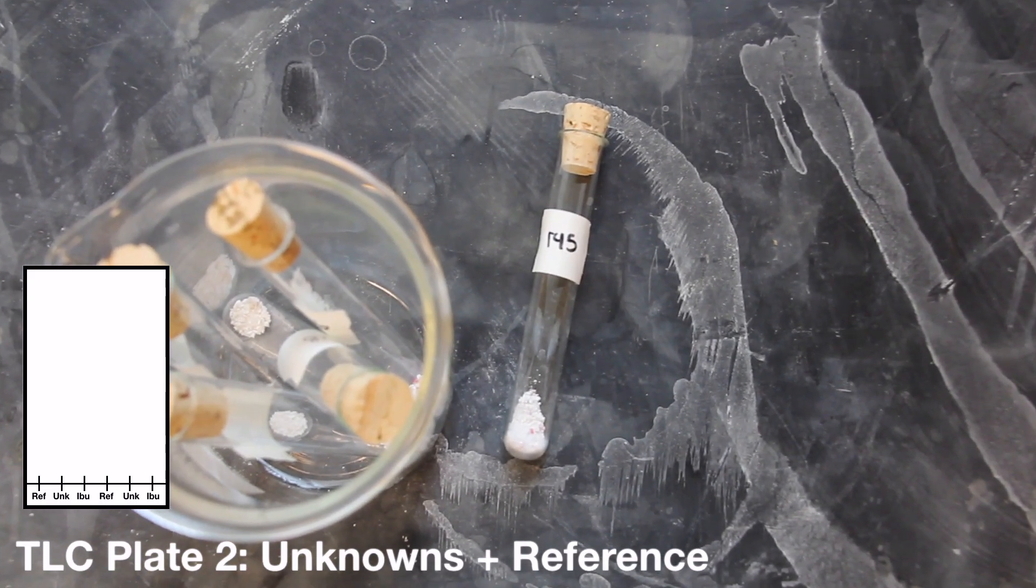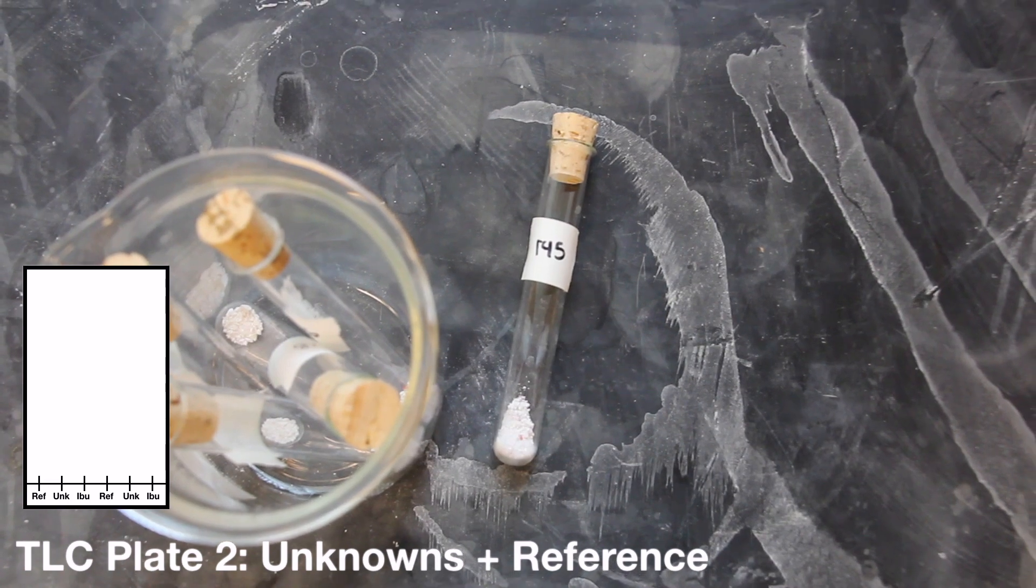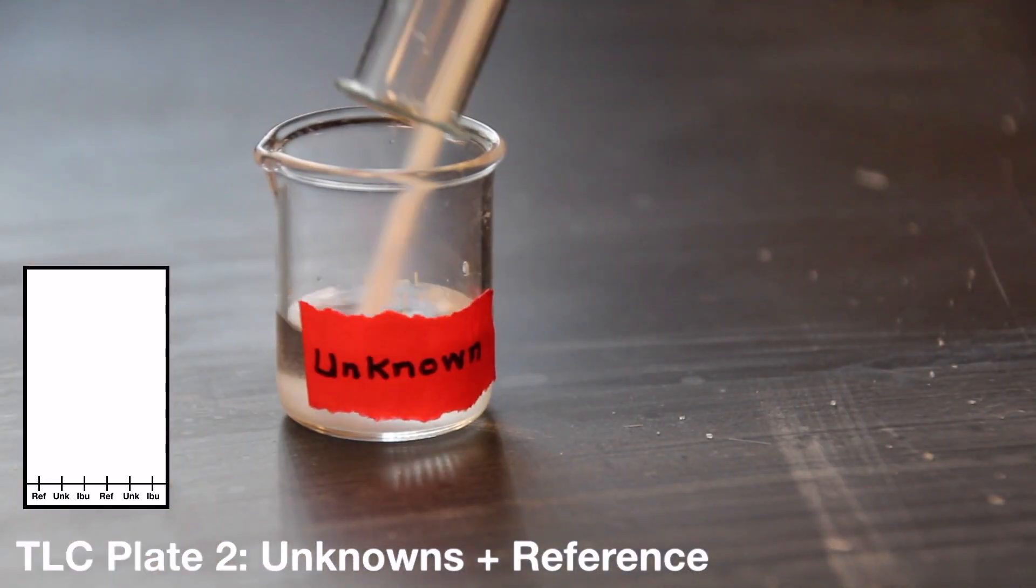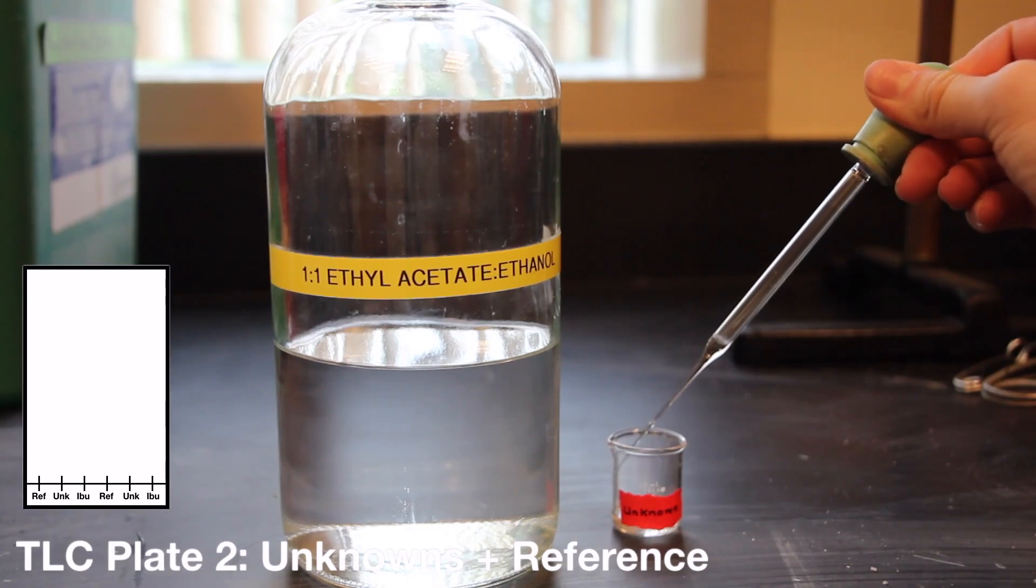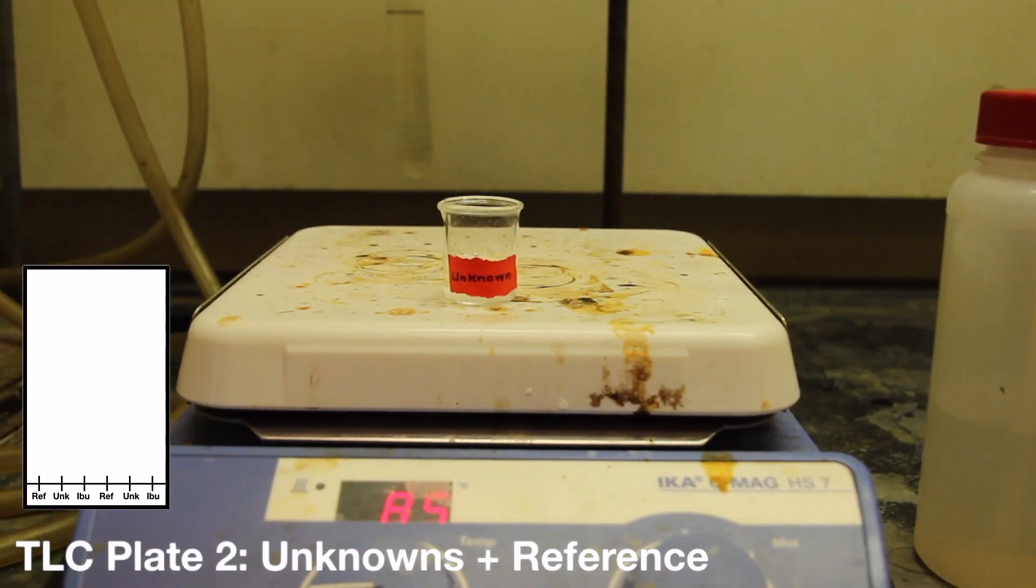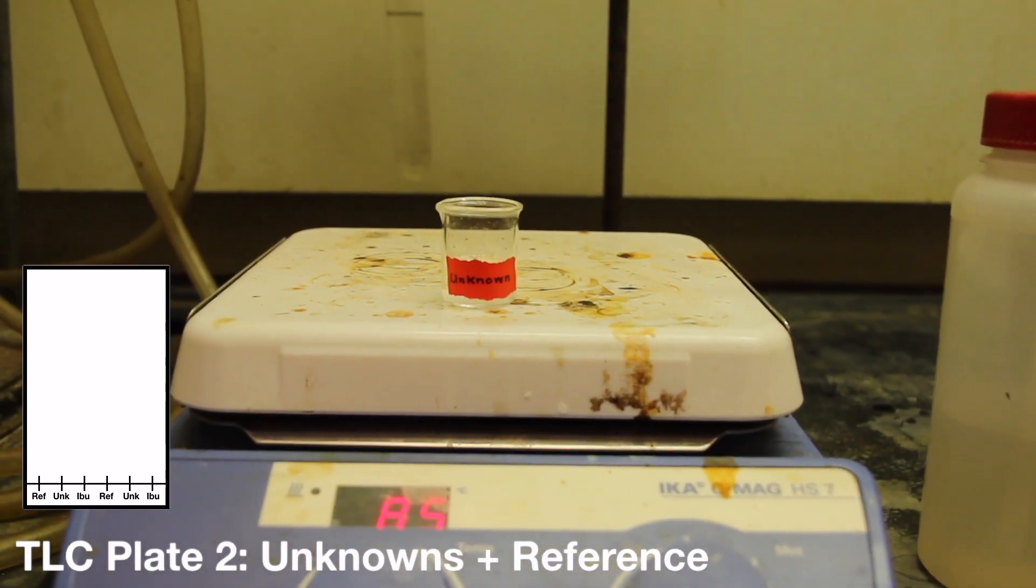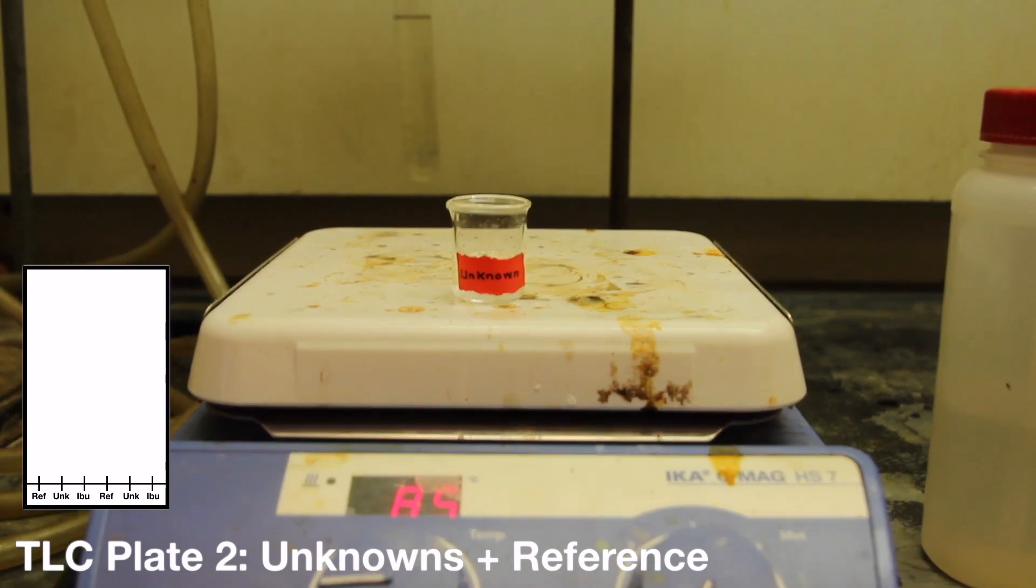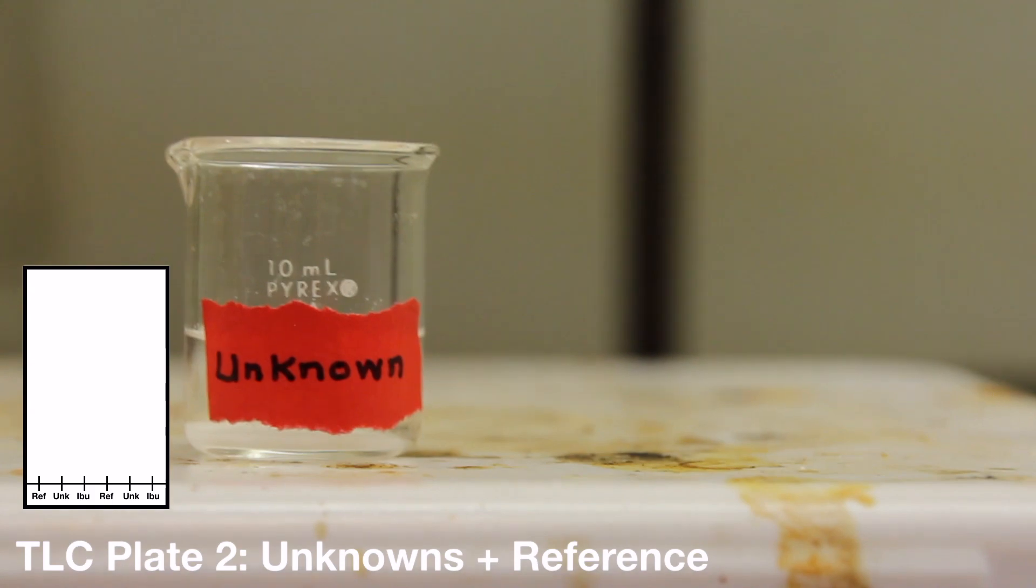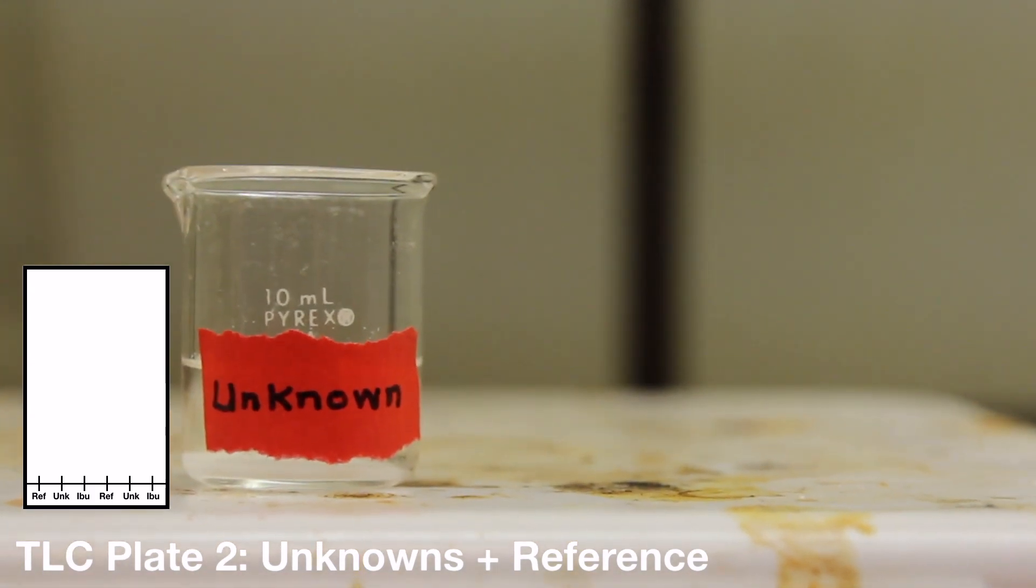You are now ready to prepare your unknown analgesic for analysis. Begin by placing it into a labeled 10 milliliter Erlenmeyer flask. Next, add 5 milliliters of 1 to 1 ethyl acetate and absolute ethanol. Gently heat the mixture for at least 5 minutes over a hot plate in the hood. After heating the sample, allow the solution to cool and let the solid material settle at the bottom of the container. The sample is now ready for TLC analysis.